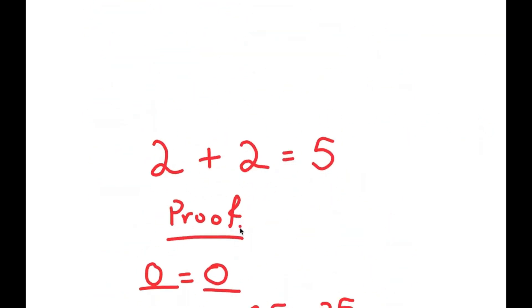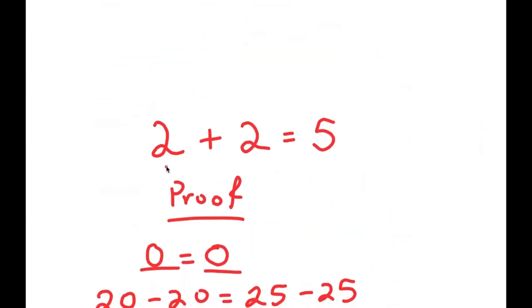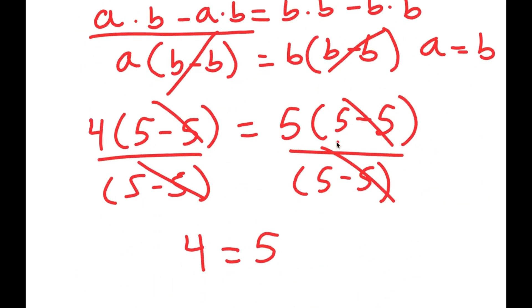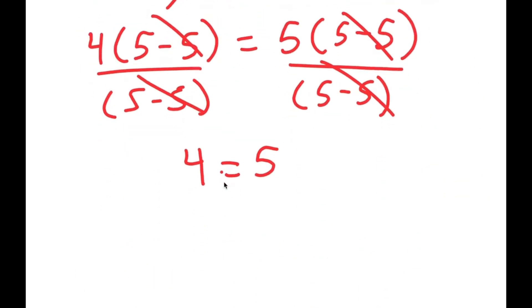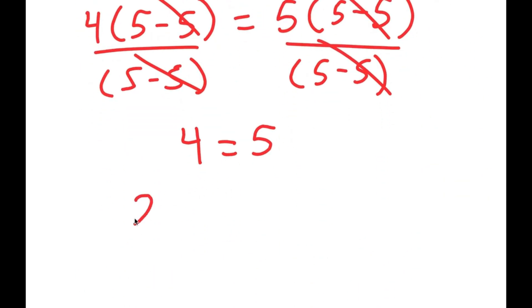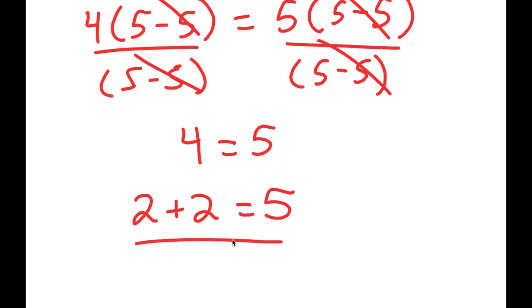Going back to our original equation, I said I was going to prove that 2 plus 2 is equal to 5. Well, what is 4 equal to? 4 is equal to 2 plus 2. So I get 2 plus 2 is equal to 5 — I just proved that 2 plus 2 is equal to 5.